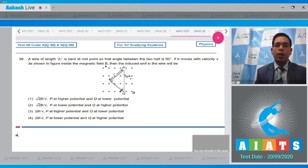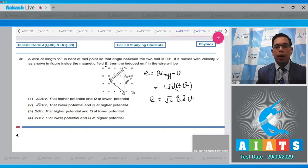For a curved conductor, the EMF induced will be equal to B into L effective into V. Here L effective will be equal to L root 2, hence it will be L root 2 into B V. The EMF will be equal to root 2 BLV. From the right hand rule, P will be at higher potential than Q, and hence option number 1 will be the correct answer.